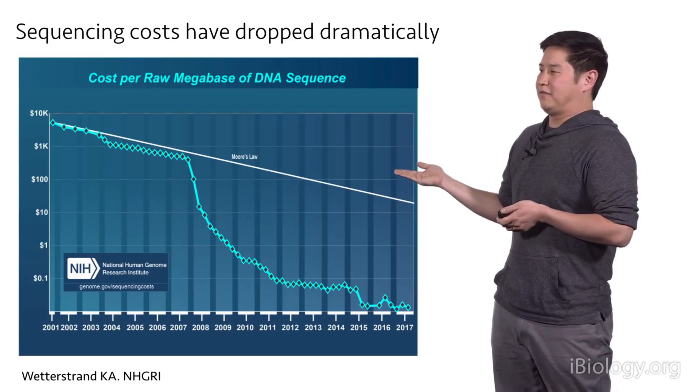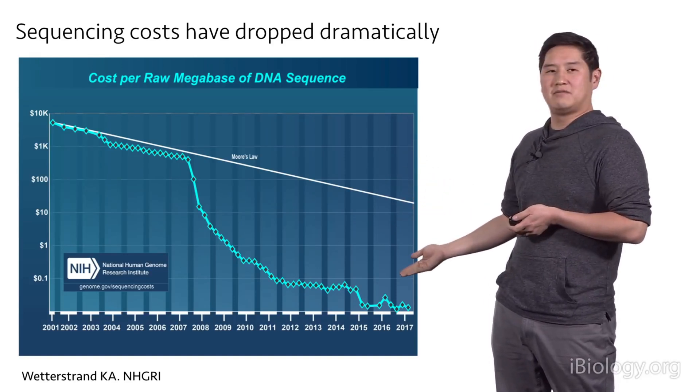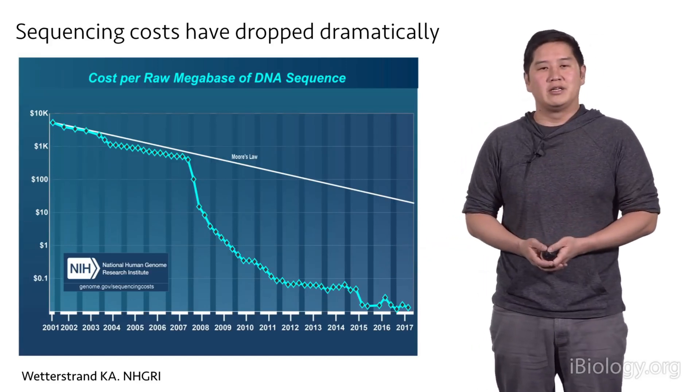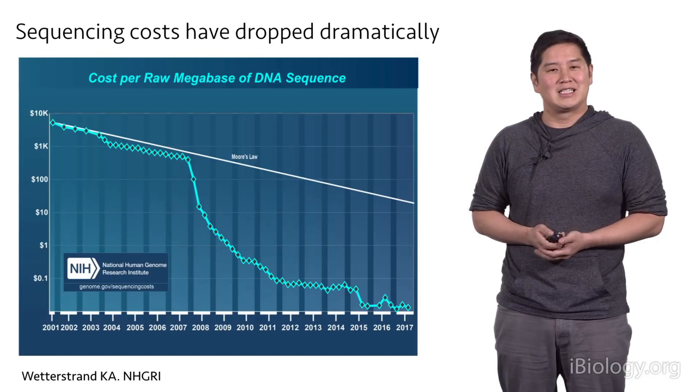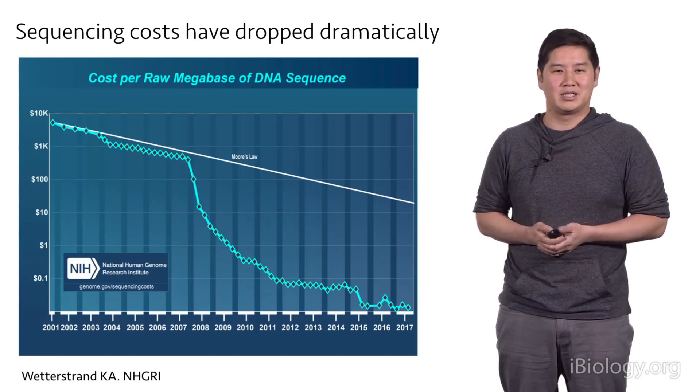If you follow this chart, you can see that there are several inflection points in 2007, 2010, and 2015, where prices had some fairly steep drops. These were largely driven by new sequencing systems introduced by Illumina, the dominant player in the next-gen sequencing market.